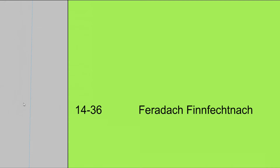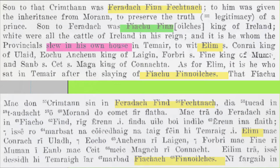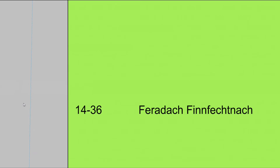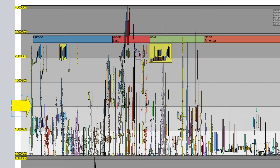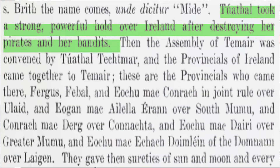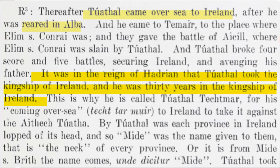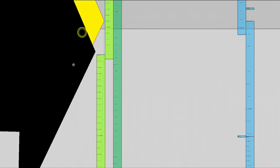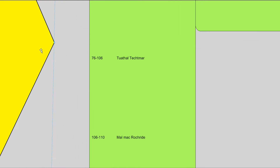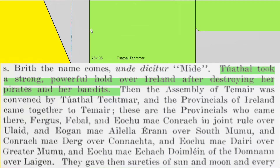In English and Gaelic, we have a snippet that talks about Feradach Find Fechtnach. Not much is going on — we just have his name and a couple of sentences. The only other interesting thing I found was pirates attacking Ireland at the time of the Apostles, around 76 to 106 AD — still the time when John the Beloved was alive — when pirates were attacking during the time of Tuathal Tectmar. Tuathal took a strong, powerful hold over Ireland after destroying her pirates and her bandits.